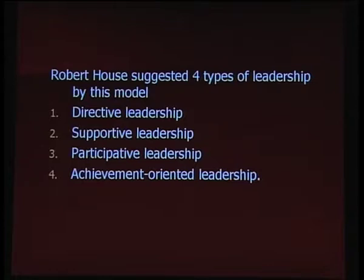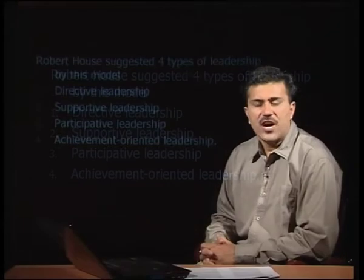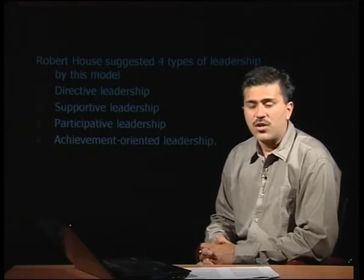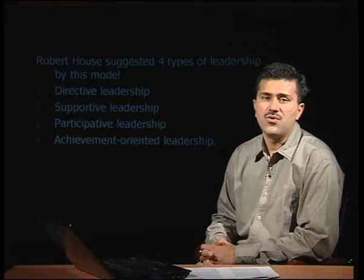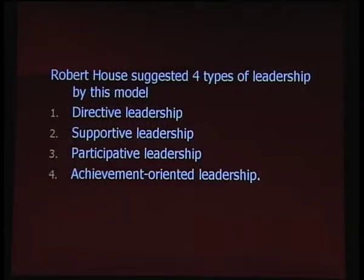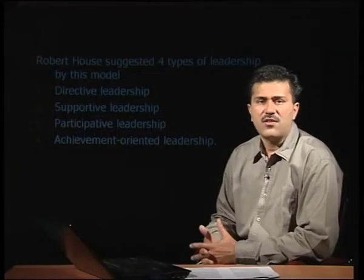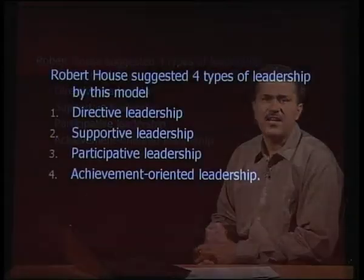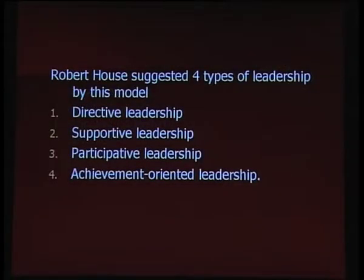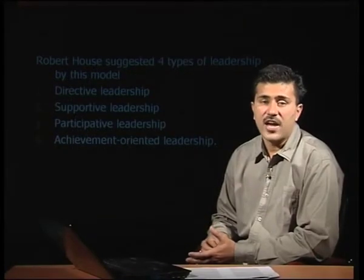Robert House suggested four different types of leadership in this model. First is directive leadership, where the leader acts as an autocrat. Second is supportive leadership, where the leader tells people what support is available but they must do it on their own. Third is participative leadership — the leader is just a part of the team with no formal relationship. Fourth is achievement-oriented leadership, where leadership is driven by pursuing achievement.